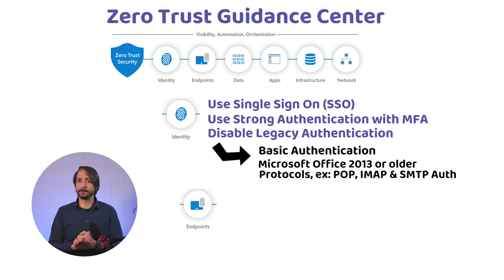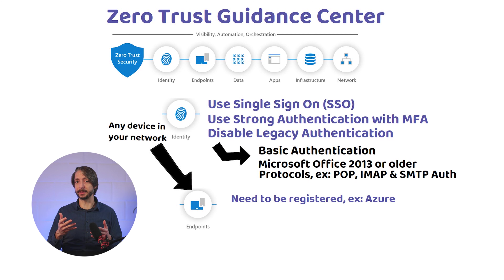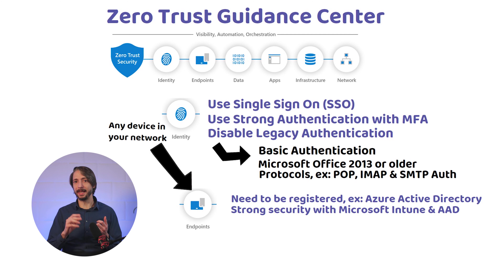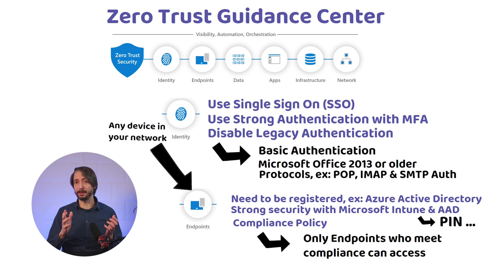For endpoints — any device connected to the network — this can be challenging because organizations may have bring-your-own devices they have no control over. In broad terms, all devices and endpoints need to be registered in, for example, Azure Active Directory. Strong security settings should be enabled with Microsoft Intune and Azure AD, such as PIN requirements on those devices. You enable a compliance policy so that only devices meeting your security requirements are able to access. In the end, you should have a single pane of glass — for example, Microsoft Endpoint Protection Manager — to manage everything and route device logs to a SIEM.